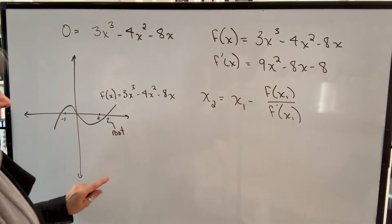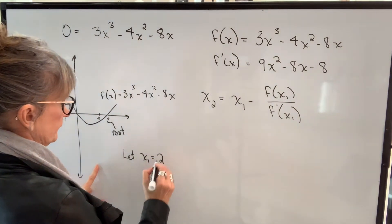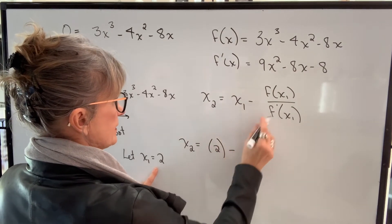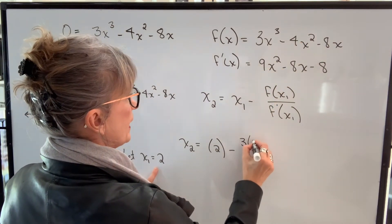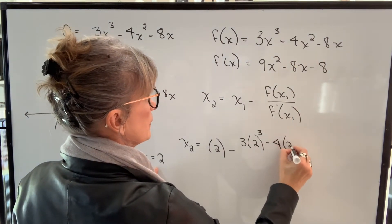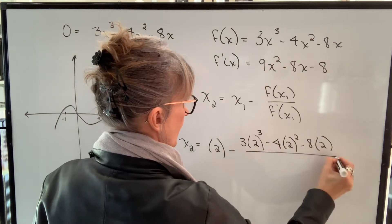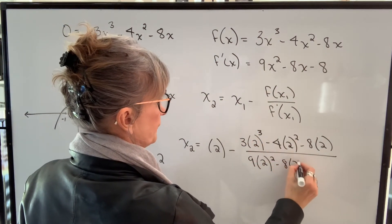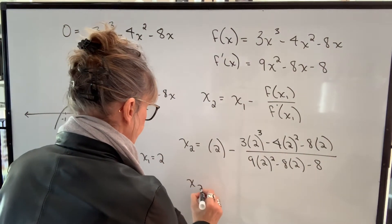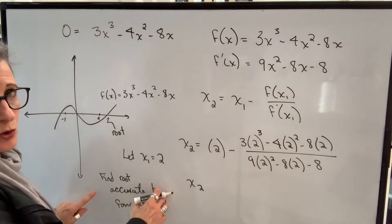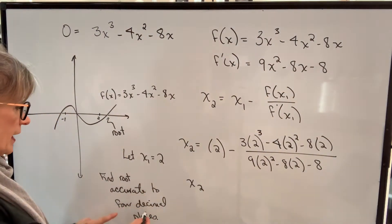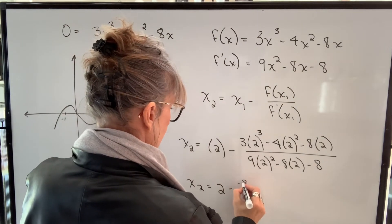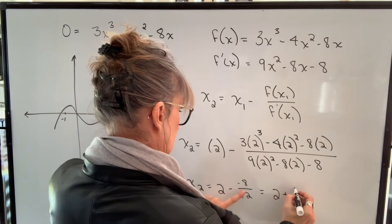So in this example, I know I'm going to use 2 as my x1, so I'm going to do this calculation. So x2 will be equal to 2 minus, here's my function, so I put 2 in for my x, f(2) is going to be that, divided by f'(x1), so it means f'(2), so I put a 2 in for x. And I calculate this. Usually in these questions, you'll be told how accurate they expect your answer to be, so let's say we want it accurate to four decimal places. When I calculate the numerator, I get negative 8. When I calculate the denominator, I get 12. So I will get 2 plus 2/3, which is 2.6666, and it keeps going.